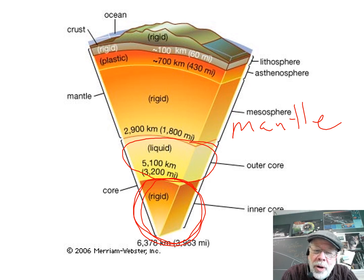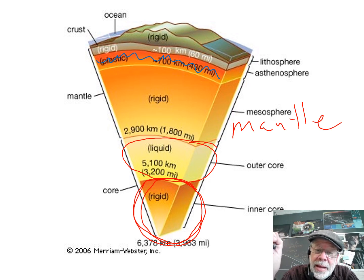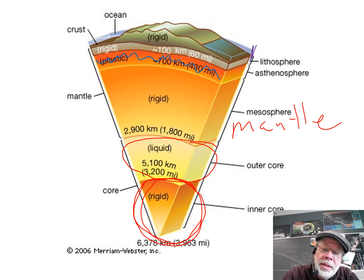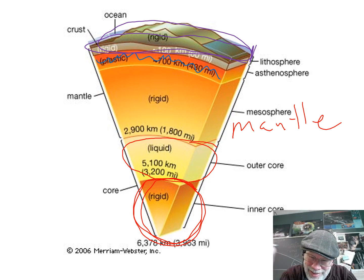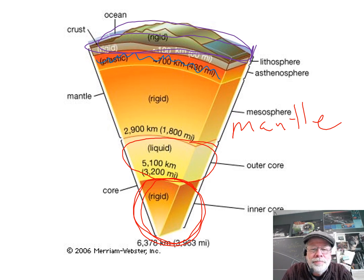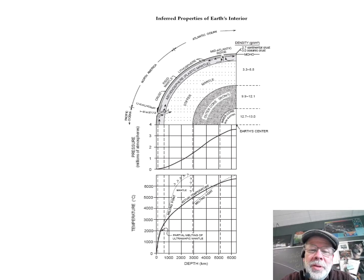The plastic mantle is where you can have convection currents. An important exaggeration to notice on diagrams of Earth's interior is the size of the crust — if drawn to scale, everything on the surface would be in one tiny thin pencil line. On your reference tables, open to the page showing the inferred properties of Earth's interior.